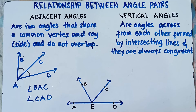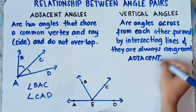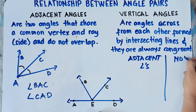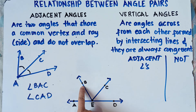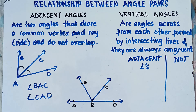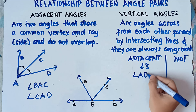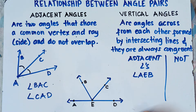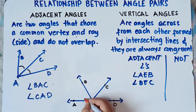So how about this illustration? What are the adjacent angles? Can we say that angle AEB is adjacent to angle BEC? Yes, that's correct, because they share a common vertex, that is point E, and they share a common side, that is ray EB. So angle AEB is adjacent to angle BEC.